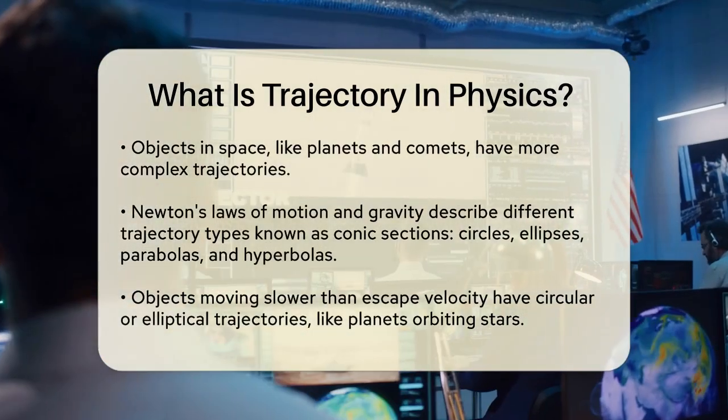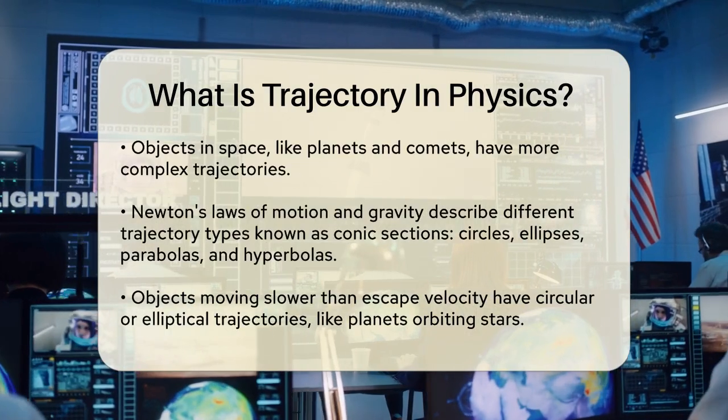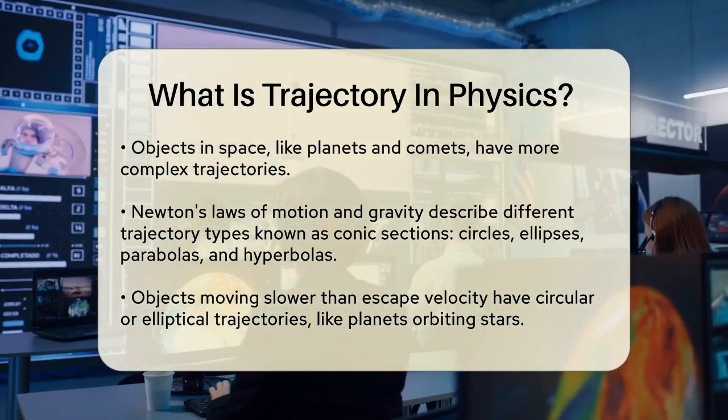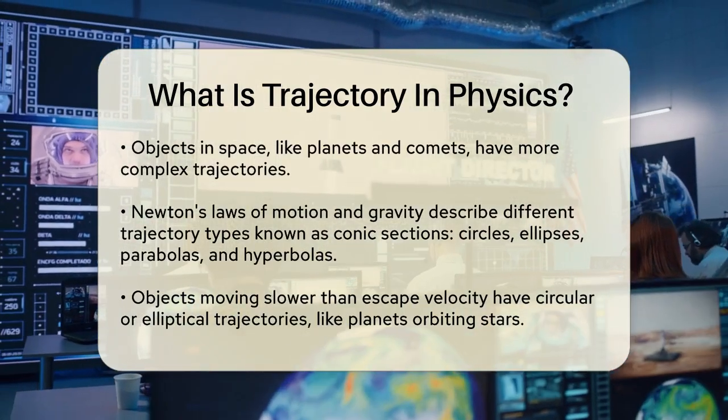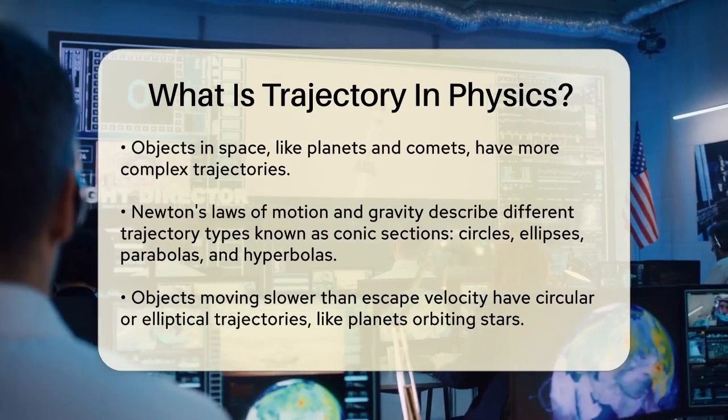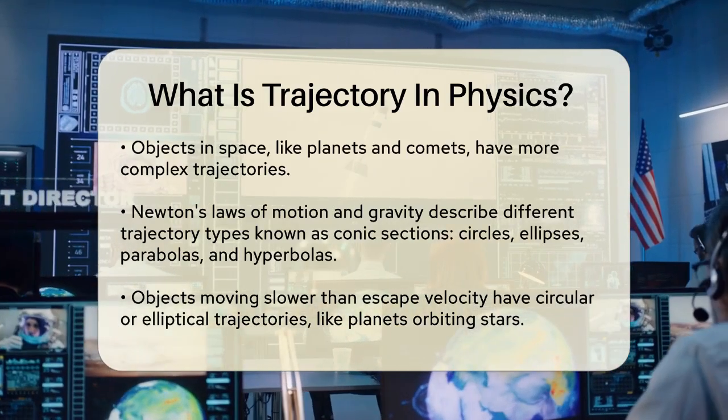For objects in space, like planets or comets, their trajectories can be much more complex. According to Newton's laws of motion and gravity, these objects can follow different types of paths known as conic sections. These include circles, ellipses, parabolas, and hyperbolas.